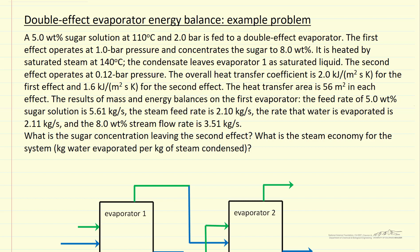In this problem, we're going to solve mass and energy balances for a double effect evaporator. However, to make it easier to follow the calculations, we've separated out and have already done the mass and energy balances for the first evaporator. They're available in a separate screencast.